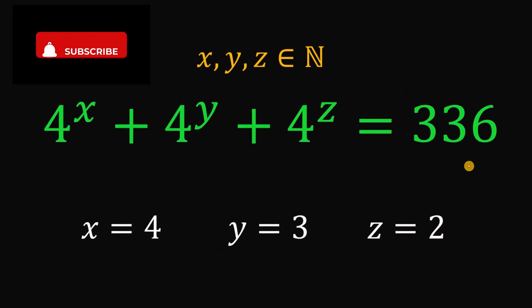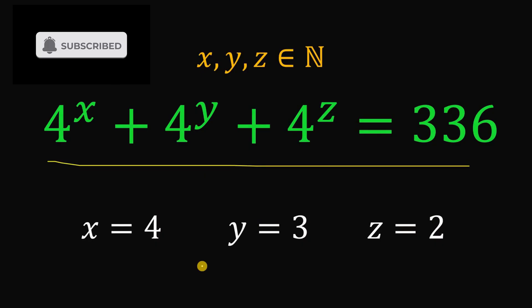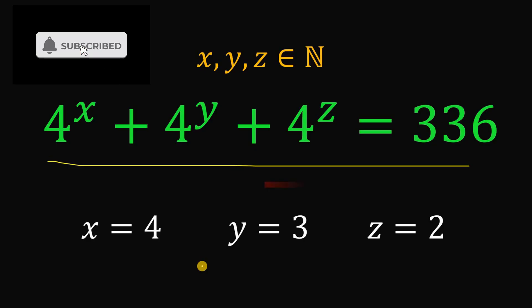So given this equation, the values of x, y, and z are 4, 3, and 2 respectively. And as always, we are done.